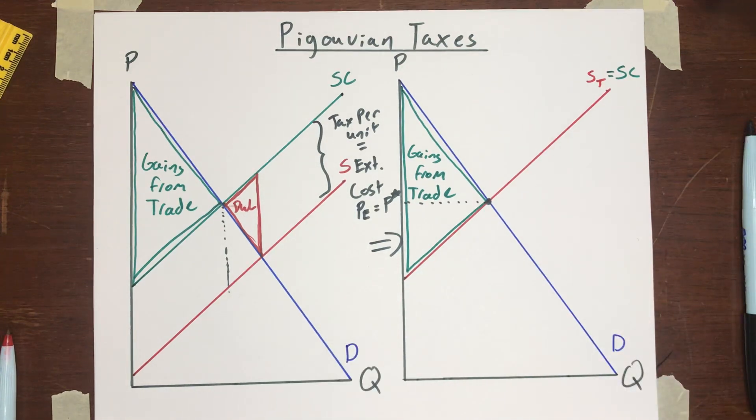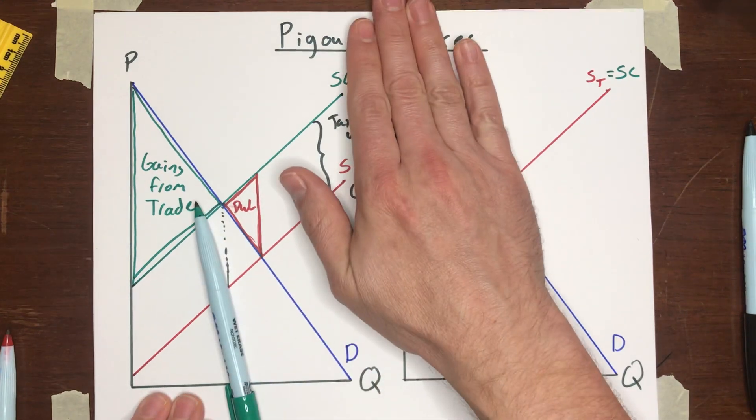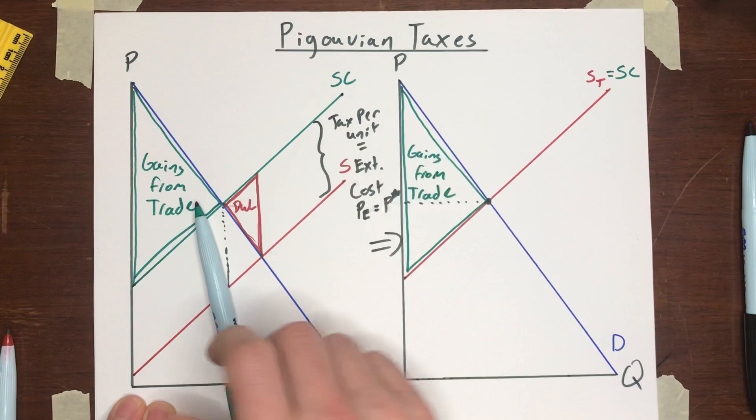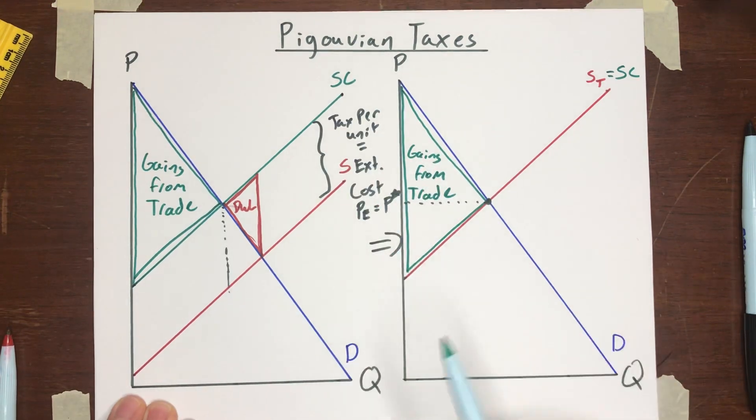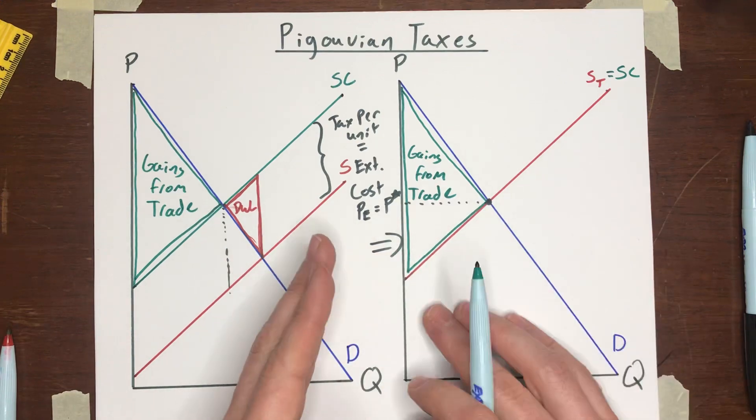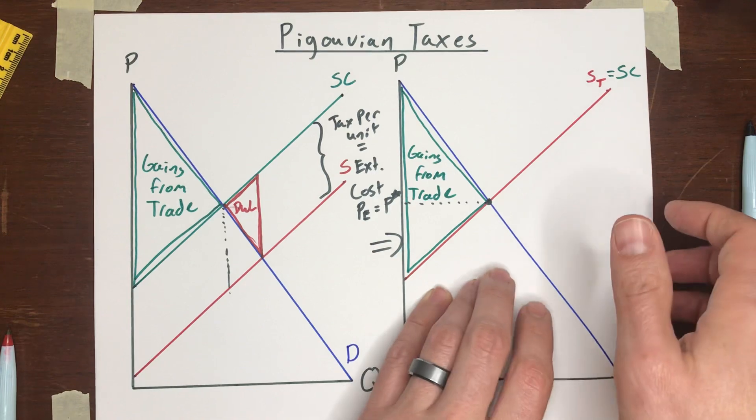So it's a nice, simple, elegant solution. We call it a Pigouvian tax because it's named after an economist, Arthur Pigou, A.C. Pigou. And so in his honor, he had talked about this problem of externalities and prescribed this solution. And so we named that tax after him.